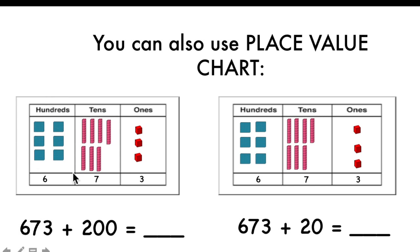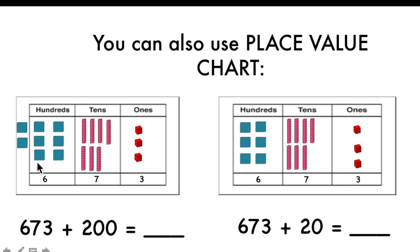Here in this box I have six hundred, seven tens — seven tens we call seventy — and three ones. The number is six hundred seventy-three. Now, I'm going to add two hundred. The two hundred will go to the hundreds blocks. I added two hundred. When I'm adding hundreds, the tens digit and ones digit stay the same. Only the hundreds digit is changing.